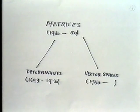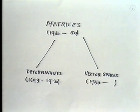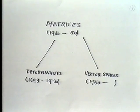So altogether I distinguish three phases of linear algebra: first there was the period in which determinants were predominant, which lasted for a very long time; then we had matrix theory as the principal tool for treating linear equations; and now the modern way of using vector spaces.